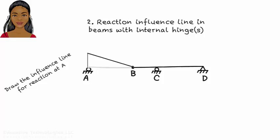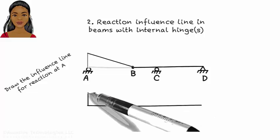The hinge divides the beam into two segments. For drawing the influence line, we treat each segment as a straight bar, so we have bars AB and BD. When we push A up, the left end of AB goes up, but the right end stays in place, so the influence line looks like this.